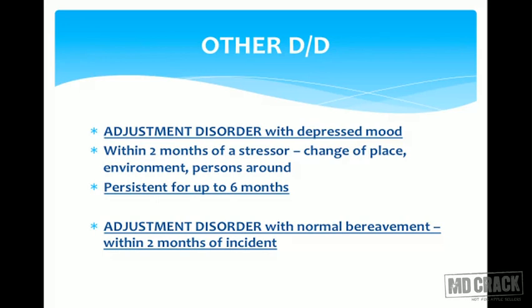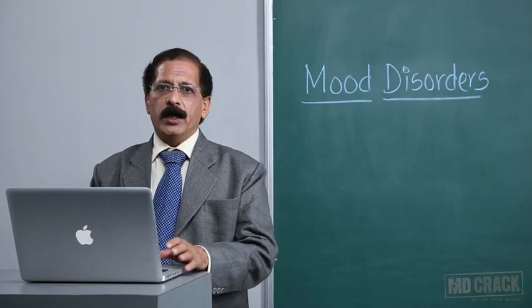Adjustment disorders are an important differential diagnosis. Adjustment disorder with depressed mood occurs within two months of a stressor such as a change of place, environment, or people, and may persist for up to six months. Adjustment disorder with normal bereavement also occurs within two months of an incident but involves a normal grief response rather than pathological depression.